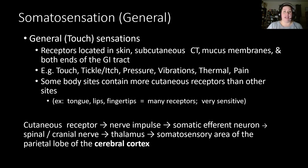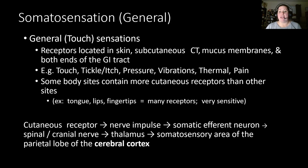Places with the highest receptor density include the tongue, fingertips, and lips — which is why babies and toddlers explore the world with their hands and mouths. These are the most sensitive areas compared to the leg or forearm. The pathway from skin to brain begins at the cutaneous receptor, which sends a nerve impulse to the somatic afferent neuron toward the CNS, then travels through a spinal nerve or cranial nerve to the spinal cord or brain stem, and on to the thalamus.